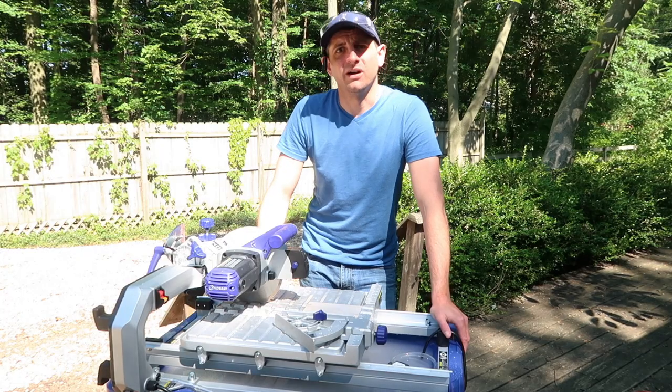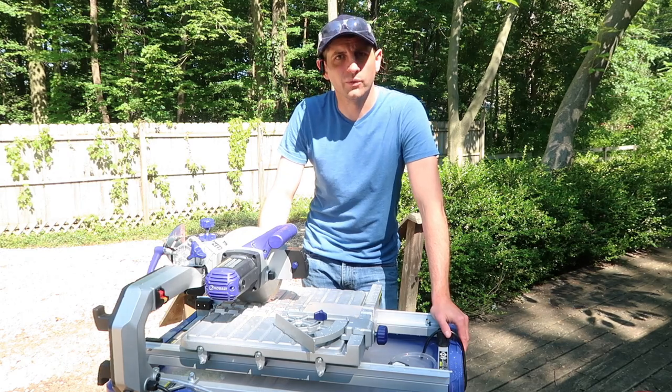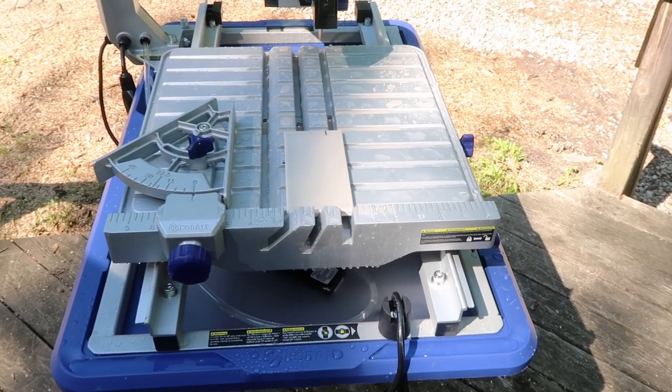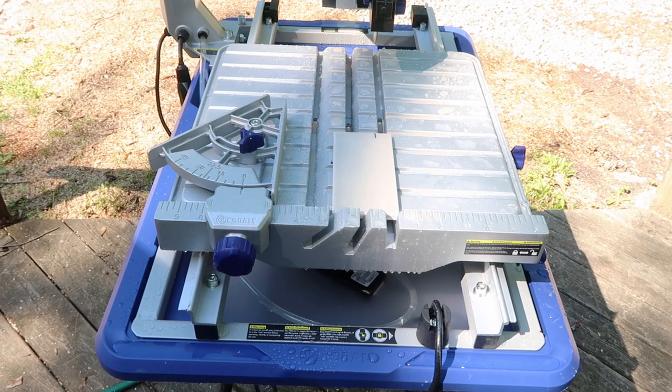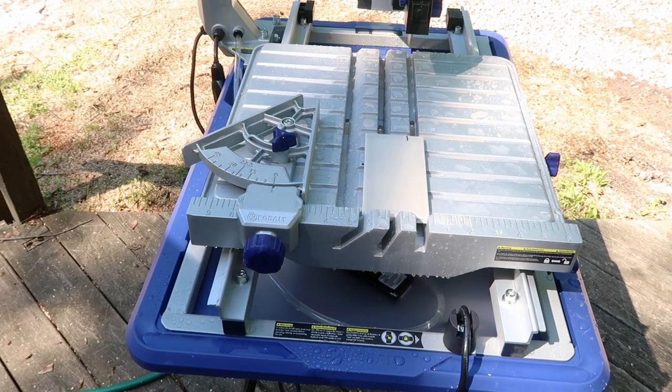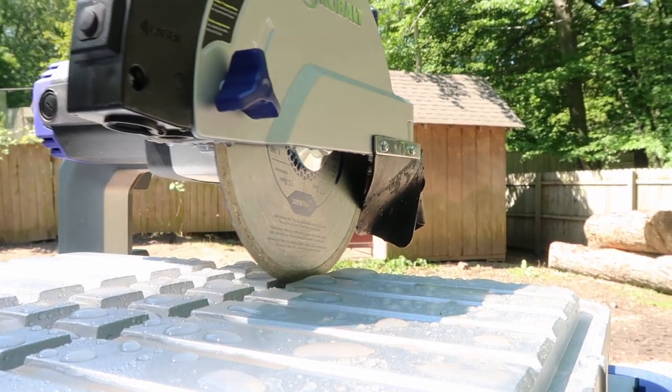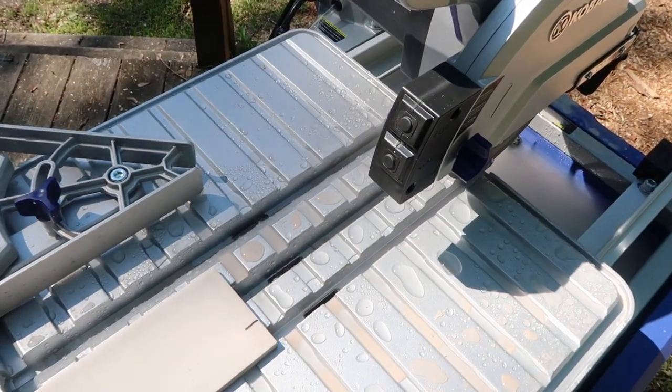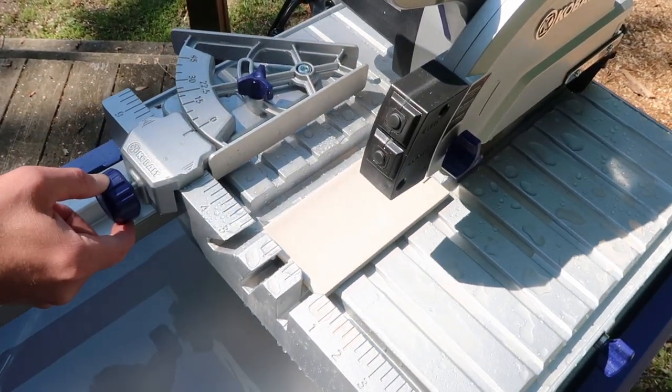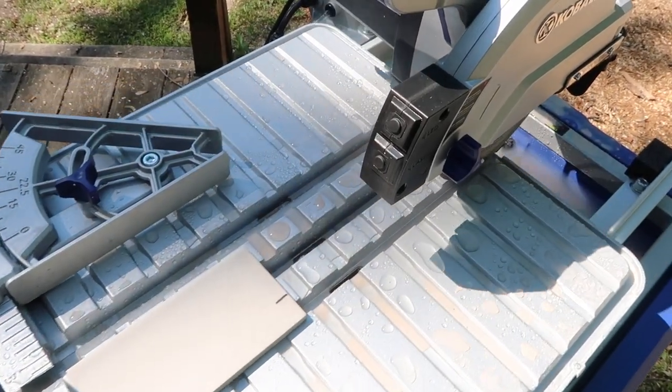We use a wet saw to cut our tile. If you've never used one before, the way that it works: there's a bath of water at the bottom and a small pump that pumps water up through a hose and sprays a diamond tip blade which actually grinds away the tile. So you put your tile on the tray, hold it really steady, and then slide the tray through the blade which is fixed.